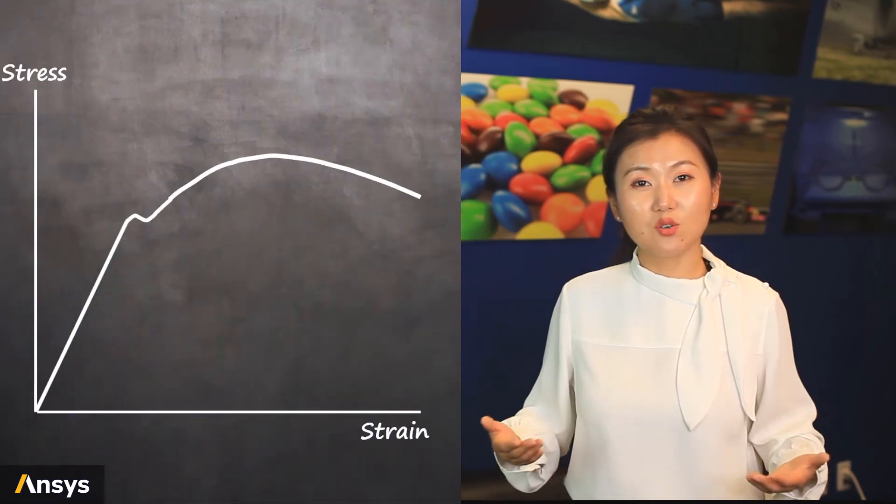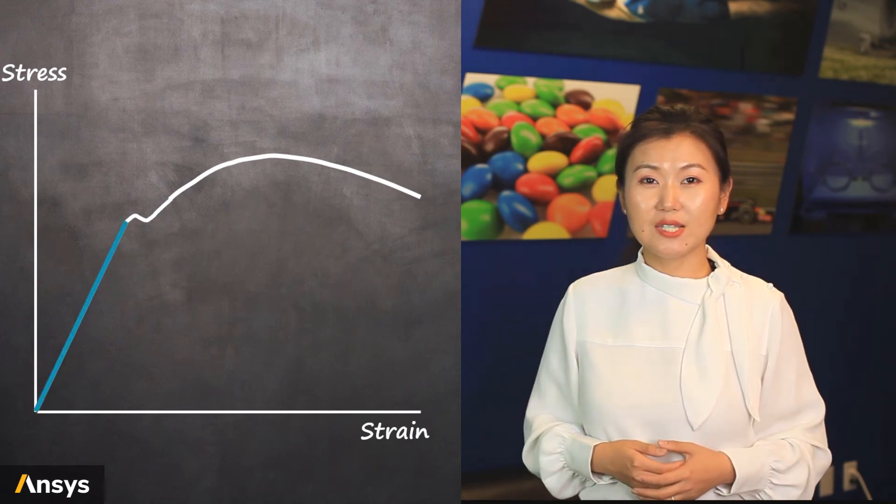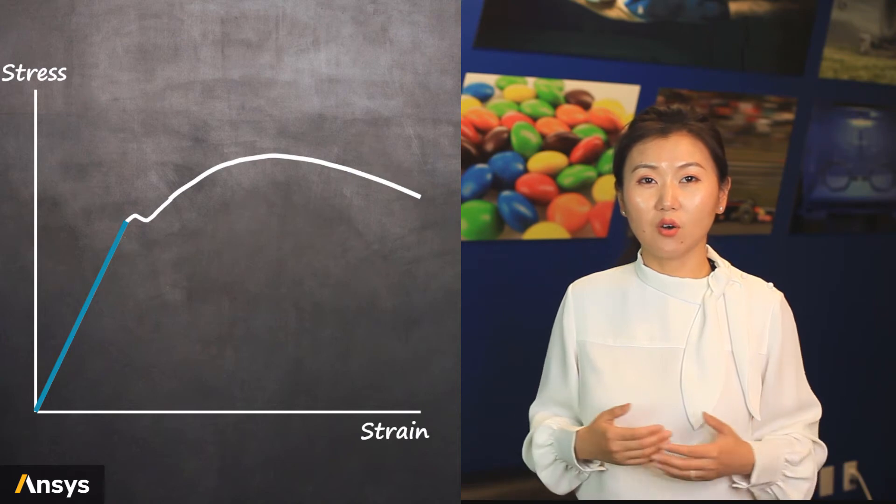All metal materials share very similar patterns of behavior under loads. Let's have a look of a typical 1D stress-strain curve of metal. Initially, the relationship between stress and strain is linear, which can be described by Hooke's law using Young's modulus.